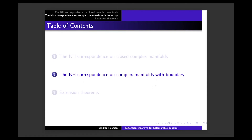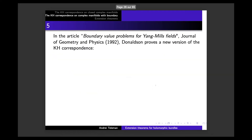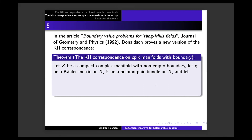Now I come to the main part of my talk: what is the Kobayashi-Hitchin correspondence on complex manifolds with boundary? This is also a discovery of Donaldson, from an interesting article I discovered relatively recently: 'Boundary value problems for Yang-Mills fields.' Donaldson proves a new version of the Kobayashi-Hitchin correspondence, this time on compact complex manifolds with non-empty boundary. Let X-bar be a compact complex manifold with non-empty boundary, and let G be a Kähler metric on X-bar.